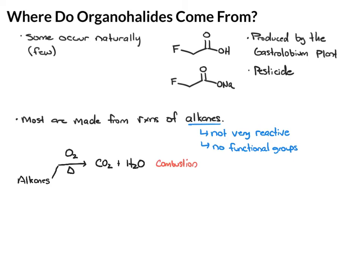The other thing you can do with alkanes is react them with halogens. For example, if you take Cl2 and add heat to initiate the reaction, you're going to end up with a chlorinated alkane. This is called radical halogenation, and this reaction is going to be the primary focus of this chapter.